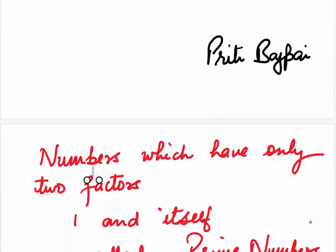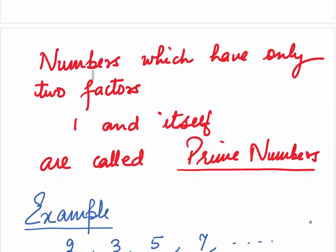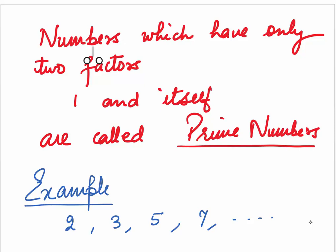Before we begin, let's understand what are prime numbers. Numbers which have only two factors, 1 and itself, are called prime numbers. In other words, numbers which are only divisible by 1 and itself are called prime numbers.